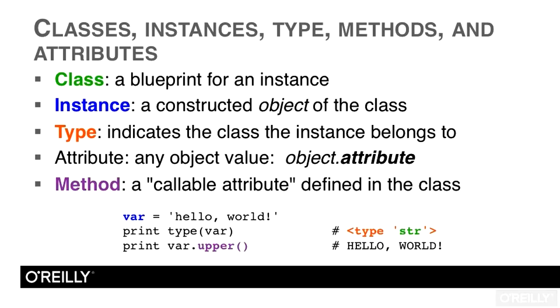As we mentioned, a class is a kind of factory for an instance. This factory contains a blueprint which describes how to make instances. Instances, or objects as they're also called, are constructed from the class.